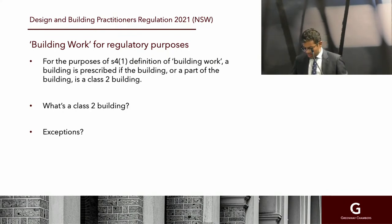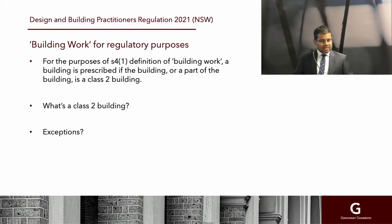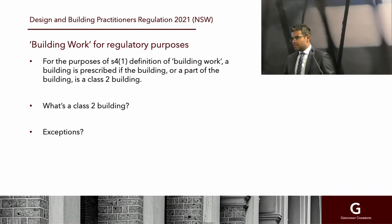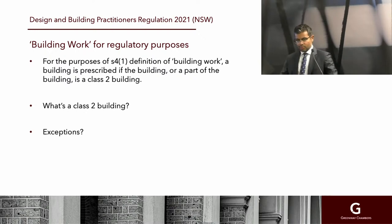That might seem straightforward, but there are a few things to consider. The definition says a building is prescribed if a part of the building is a Class 2 building — meaning even if only part of a building is Class 2, it will arguably be caught by the definition. As a result, mixed-use buildings will actually be captured and the regulations will apply. You should also note that there are exclusions from the scope of the definition of building work — things like exempt development and waterproofing are excluded.